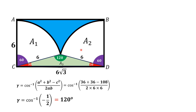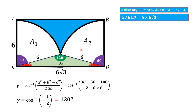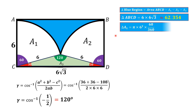Now let me find first the area of this rectangle, that is 6 times 6√3, which is equal to 62.354 square units. Now we find the area of sector A1. The area A1 is equal to π r² multiplied by 60/360, where r = 6 units, and that equals 6π, which is approximately 18.85 square units.